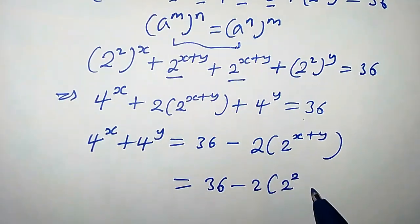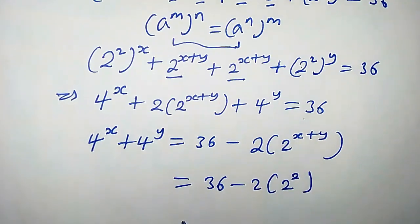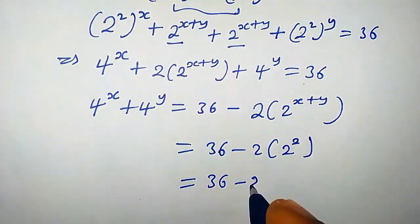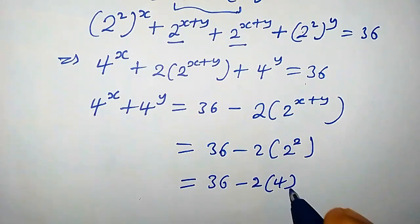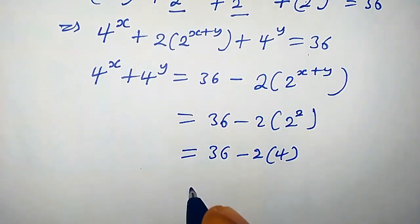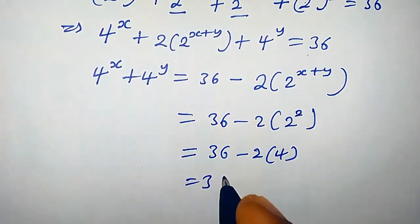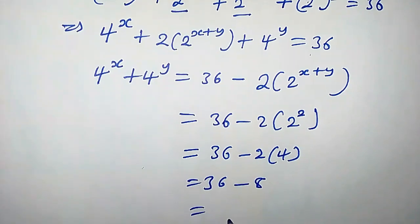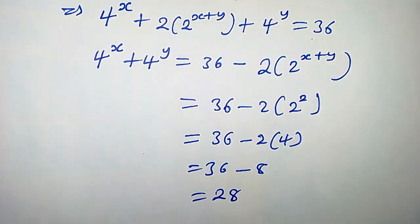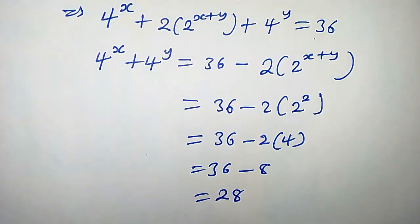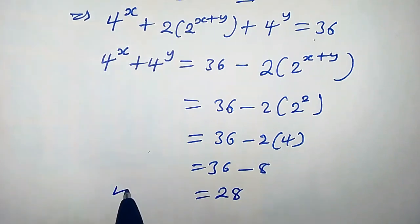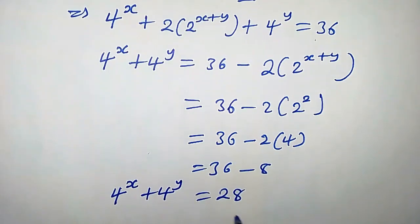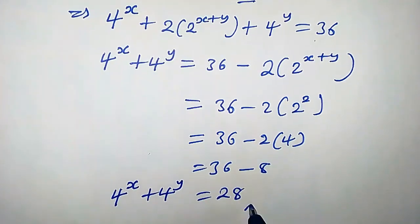Plugging in x plus y equals 2, we get 36 minus 2 times 2 squared, which is 36 minus 2 times 4, that is 36 minus 8, which equals 28. So 4 to the power of x plus 4 to the power of y equals 28.